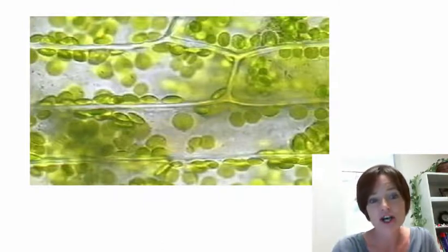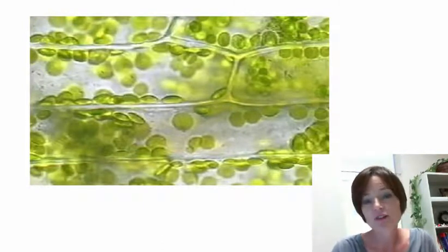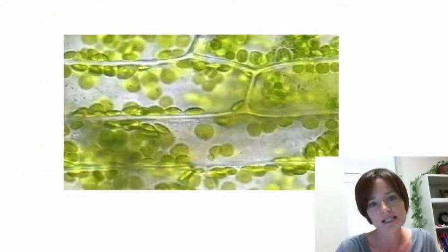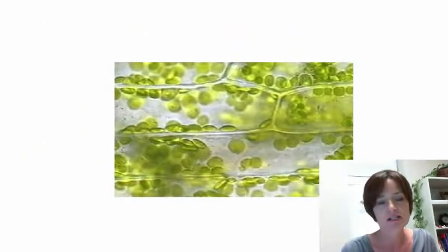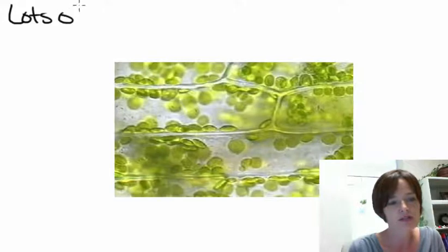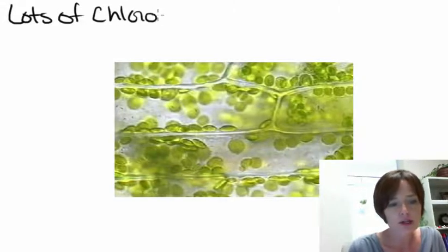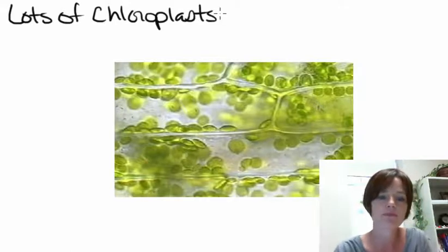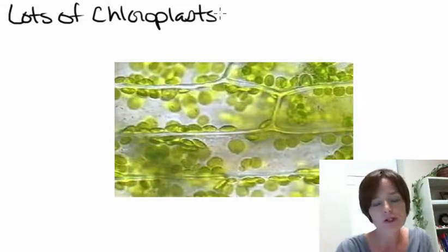This microscopic image of plant cells shows that we have a lot of chloroplasts inside the plant cells. Notice there are lots of them, and the chloroplasts are rather large, so they're pretty easy to see when we have a light microscope.